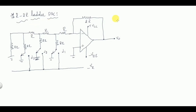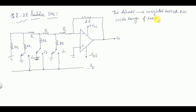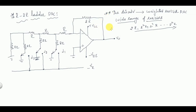The disadvantage in the case of weighted resistor DAC is that it requires a wide range of resistors, so it is difficult to fabricate on a single chip. It requires resistors like 2R, 2²R, 2³R, and so on up to 2ᴺR. If the N value increases, the number of different resistor values also increases. This is the main disadvantage of the weighted resistor DAC.